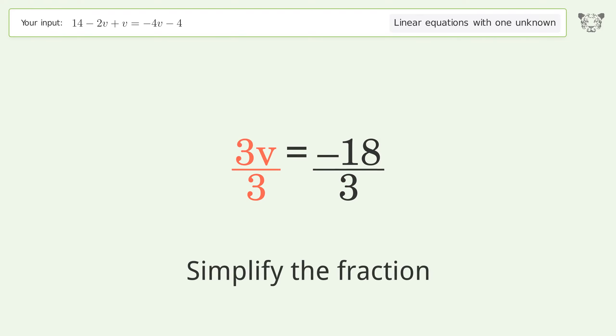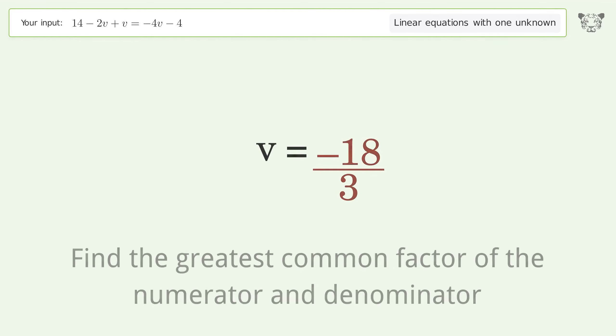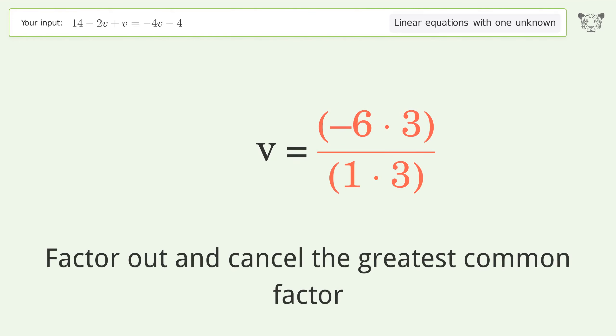Simplify the fraction. Find the greatest common factor of the numerator and denominator. Factor out and cancel the greatest common factor.